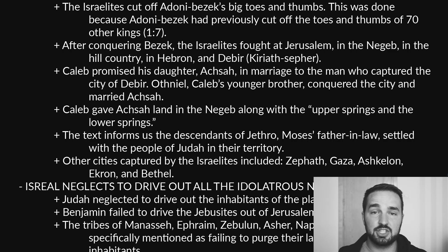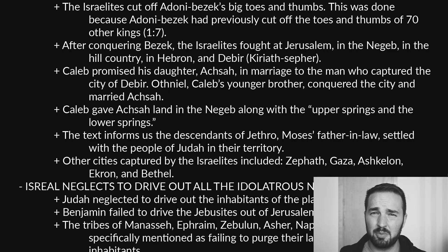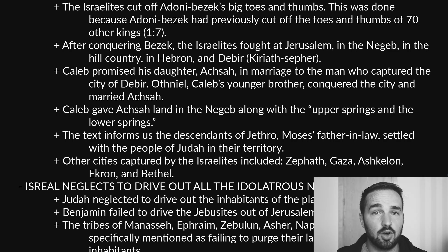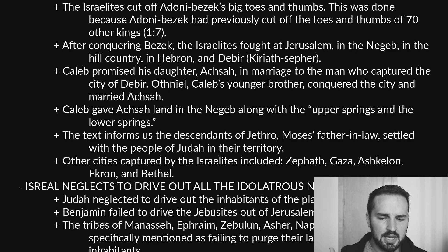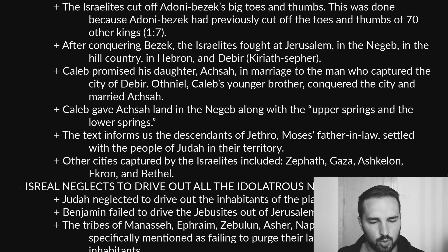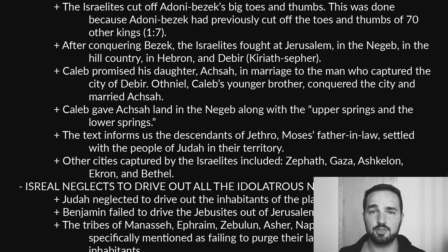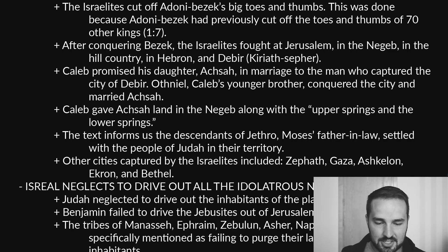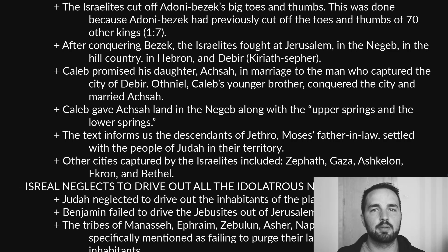The text informs us that the descendants of Jethro — do you remember Jethro? He was the father-in-law of Moses — settled with the people of Judah in their territory. Other cities captured by the Israelites included Zephath, Gaza, Ashkelon, Ekron, and Bethel, and you'll see most of those on the map.